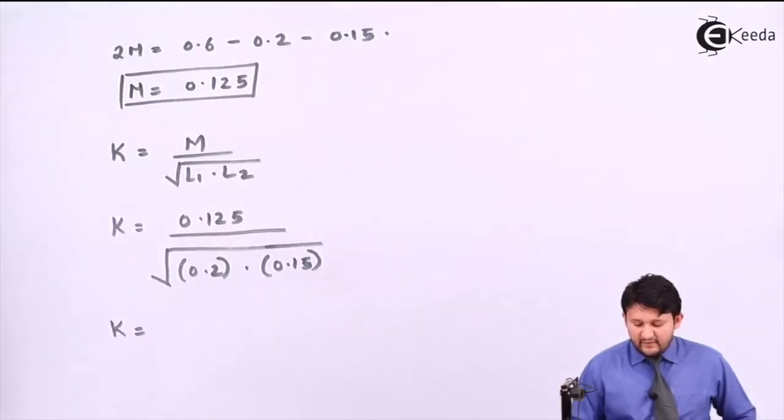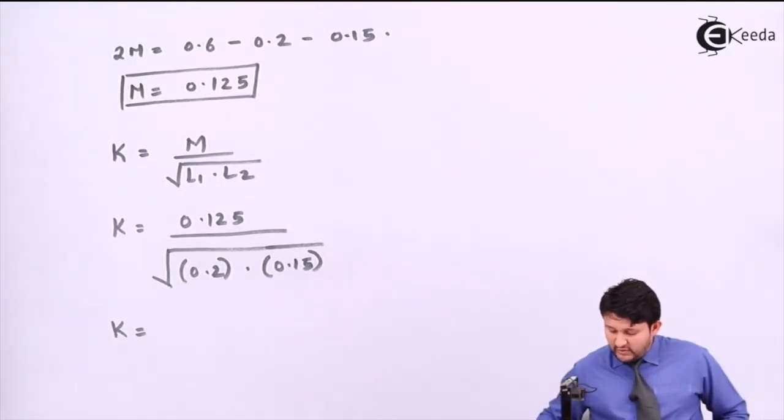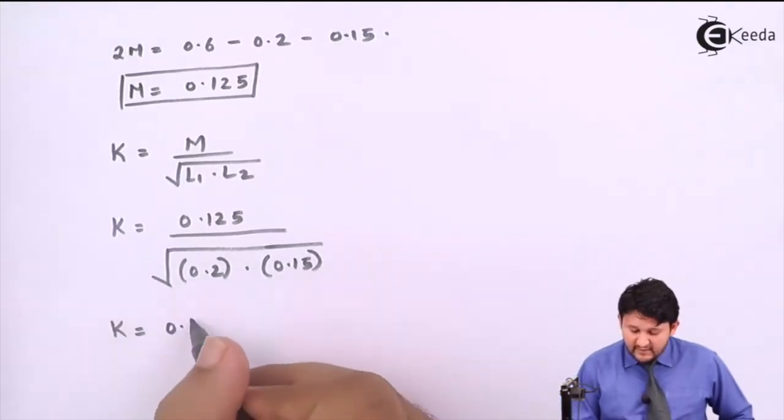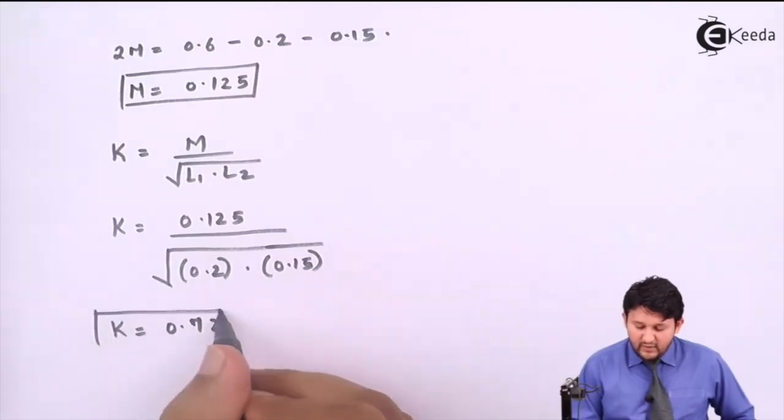Simplify it, you will get the value for K. So your numerator will be 0.125 and your denominator divided by, denominator will be bracket, under root again bracket, it will be 0.2 into 0.15, bracket close, again whole bracket close. The value for K which you will be getting is 0.72.